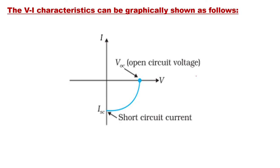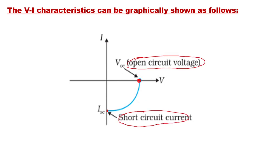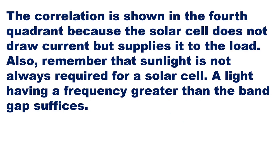The solar cell acts as a voltage source — it is not driven by any electric current or external voltage, but supplies current to the load. The VI characteristics are shown in the fourth quadrant because the solar cell does not draw current but supplies it to the load. Note that sunlight is not always required — any light with photon energies greater than the band gap suffices. Solar cells are used to power electronic devices in satellites, space vehicles, and also as power supply for calculators. Thank you, students.